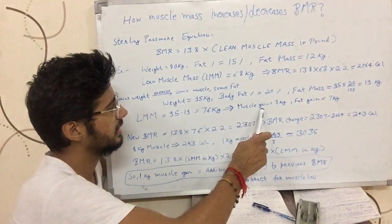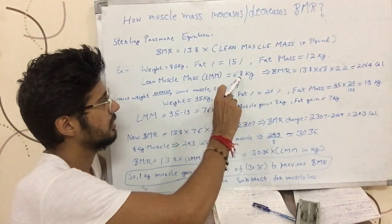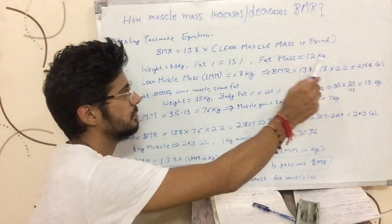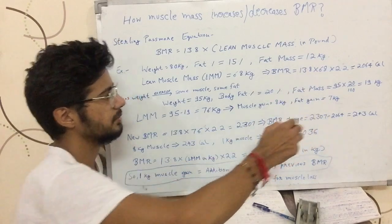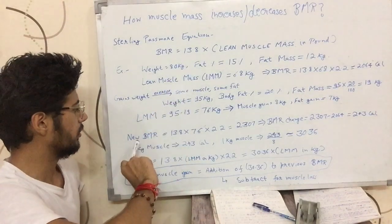What he has gained as muscle is, his new muscle mass is 76 and earlier it was 68, so he has gained 8 kilograms of muscle. Now he has 19 kilograms of fat in his body. Earlier, he had 12 kilograms, so he has gained 7 kilograms of fat. 8 plus 7 equals total 15 kilograms of body weight, which is 95 minus 80.